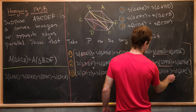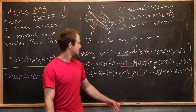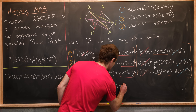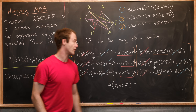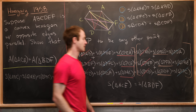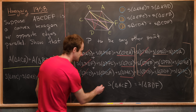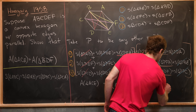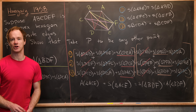We apply the identity in reverse to the three remaining terms on the left-hand side to get S of triangle ACE, and in reverse on the right-hand side to get S of triangle BDF. Since in our original hexagon the vertices are in counterclockwise orientation, these signed areas are just the plain areas. Therefore the area of triangle ACE equals the area of triangle BDF, which is exactly what we wanted to show.